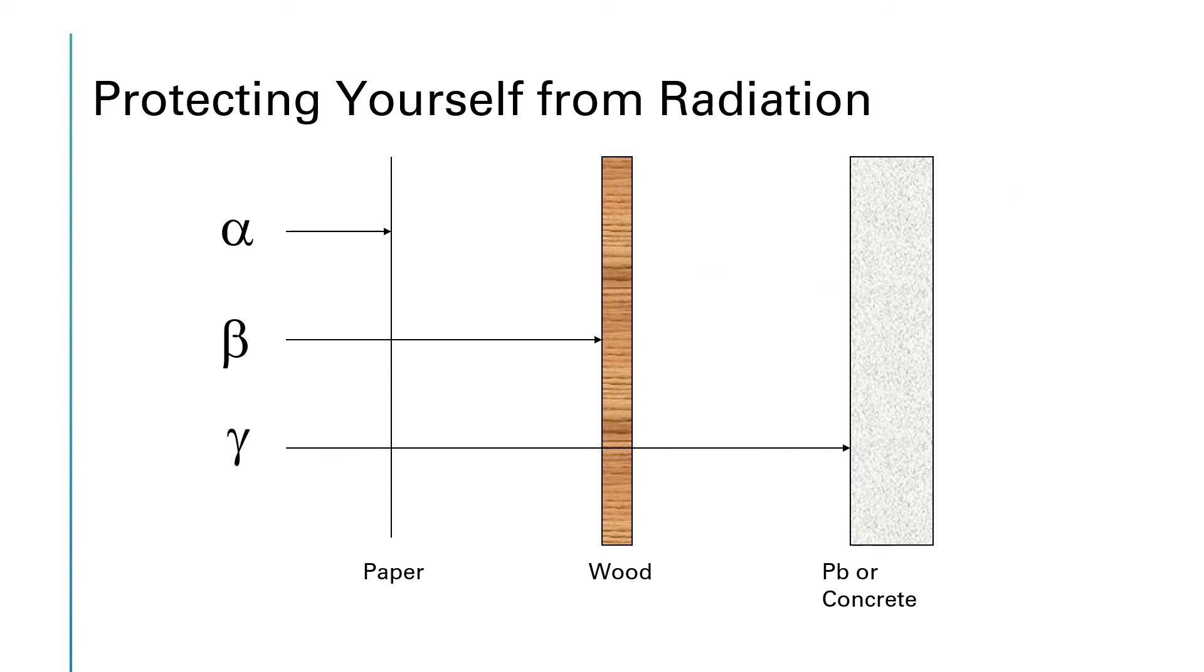Typically, alpha radiation will be stopped by something as thin as paper. Possibly even your clothing would be sufficient to protect you from alpha radiation. Beta radiation, on the other hand, will go right through something like paper, but it's typically stopped by something like wood. So if you're working in a lab that has a beta emitter in it and you wanted to protect yourself from any stray radiation, you could go down to Home Depot and buy some plywood, build yourself a box out of that plywood to enclose your equipment. And you should be fairly well protected from that beta radiation.